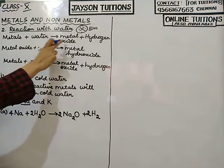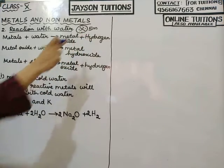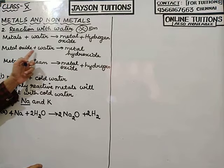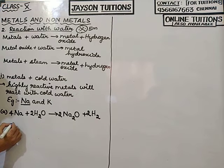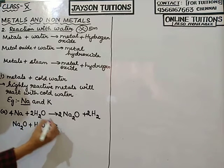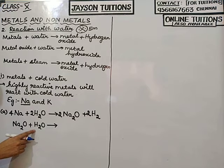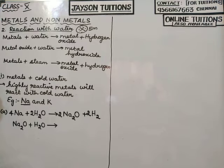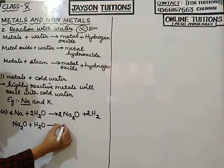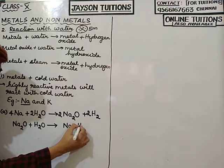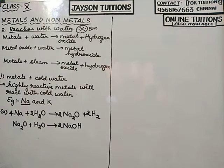Metal has reacted with water to form metal oxide and hydrogen. Now this metal oxide Na2O will react with water H2O to form metal hydroxide. With 2 sodium, 2 oxygens, and 2 hydrogens, I can write this as 2NaOH.